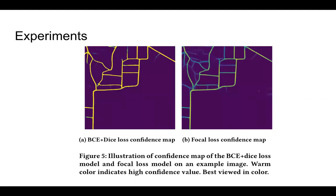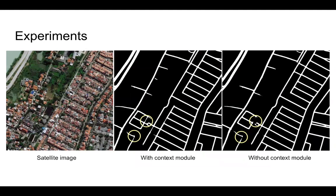This figure shows the effect of focal loss. Focal loss helps resolve class imbalance between foreground and background pixels in satellite imagery, since background pixels are far more numerous than foreground pixels. With focal loss, our model can learn to detect smaller roads. The pyramid pooling context module also provides cues to connect difficult-to-predict junctions between different roads, as seen comparing the middle and right figures.